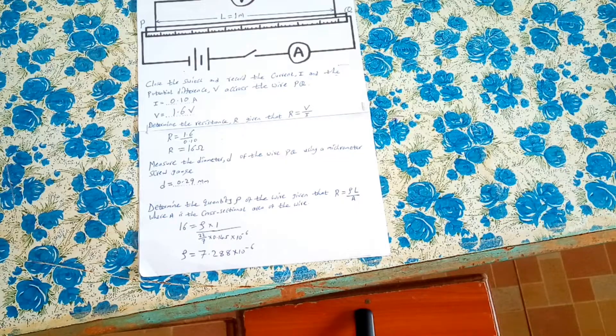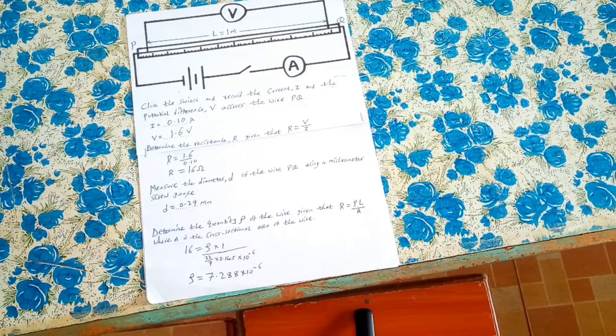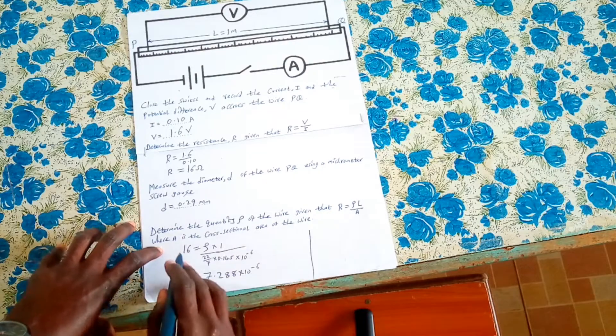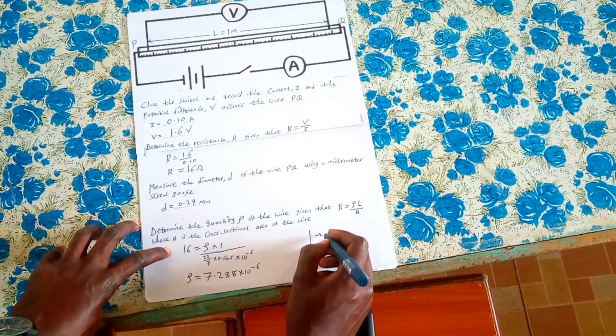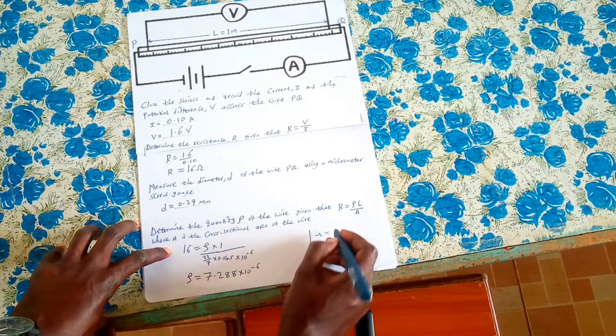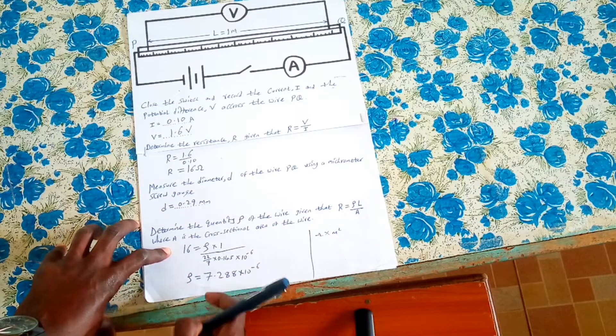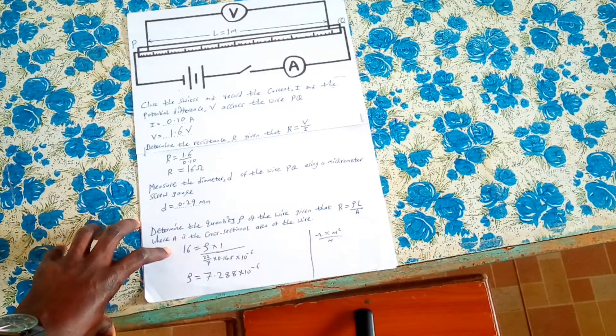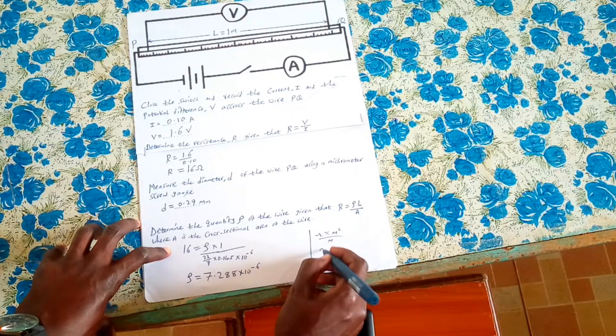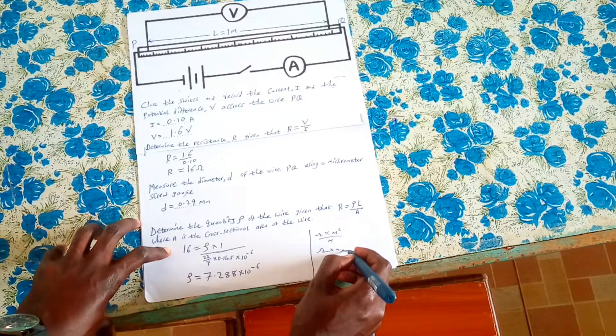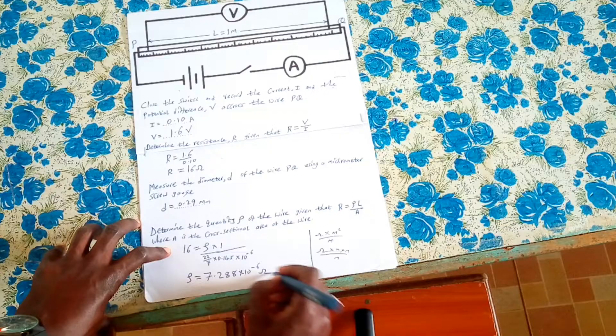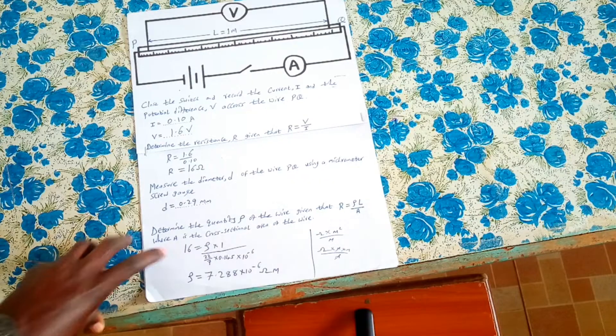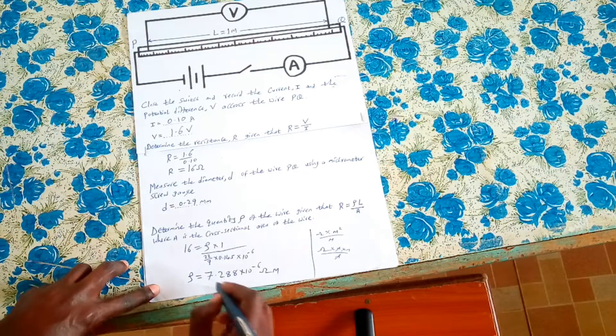Then we also need to know the unit. Let's work out the unit here. 16 is ohm, then we are multiplying by pi which has no unit, this one is meter squared, then we are divided by 1 meter. So meter squared means meter times meter, so that is ohm times meter times meter divide by meter. And this gives us ohm meter, because one meter will cancel out. So we remain with ohm meter, and this becomes now the resistivity of the nichrome wire we have used.